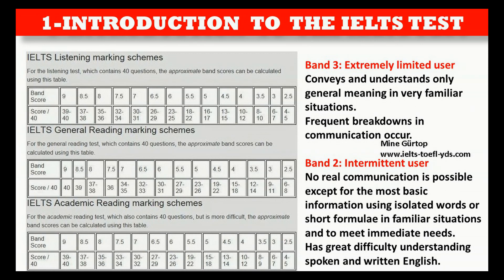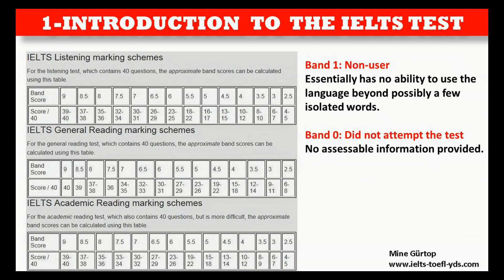Band 3 — Extremely Limited User: Conveys and understands only general meaning in very familiar situations; frequent breakdowns in communication occur. Band 2 — Intermittent User: No real communication is possible except for the most basic information, using isolated words or short formulae in familiar situations and to meet immediate needs; has great difficulty understanding spoken and written English. Band 1 — Non-User: Essentially has no ability to use the language beyond possibly a few isolated words. Band 0 — Did not attempt the test: No accessible information provided.